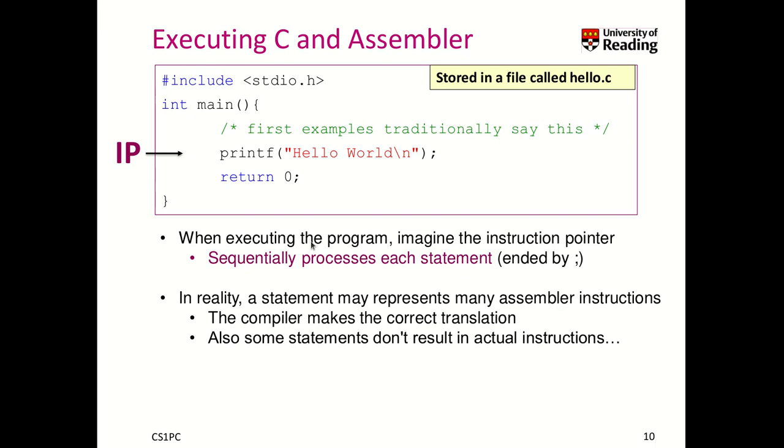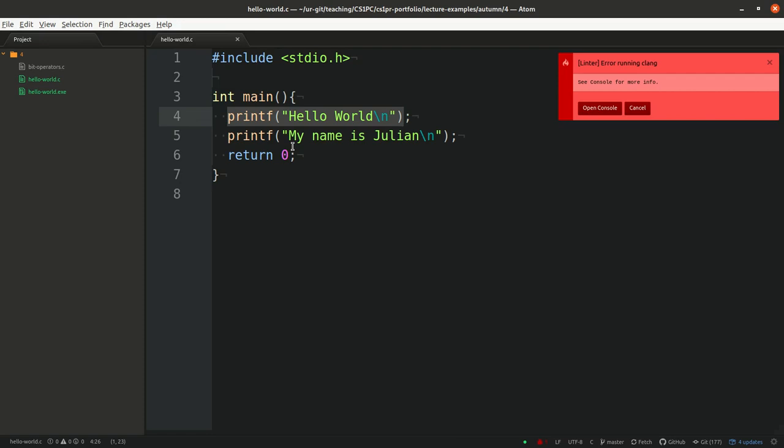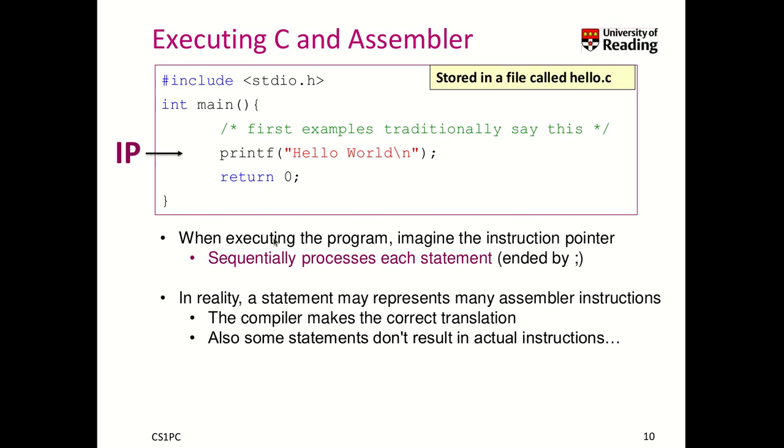So when you execute this program, you can think of it that there is this instruction pointer that we learned about last week that the computer executes it step by step. So somewhere it starts by int main, this main function like we said, and then it takes the first instruction, which you can consider ends at the semicolon for simplicity. And then it performs this execution. So in our example, basically the computer executed this function first, printed hello world. And then the instruction pointer moved to the next location and performed this operation. Step by step.